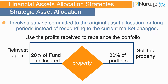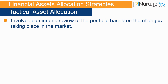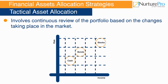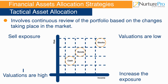In the tactical asset allocation strategy, an investor starts with a basic allocation like 50% equities, 20% property, 10% bonds, and 10% cash. The investor then observes the market. If share valuations are high, he or she will sell the exposure; if valuations are too low, he or she will increase the exposure.